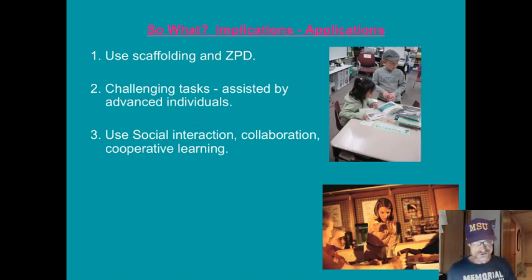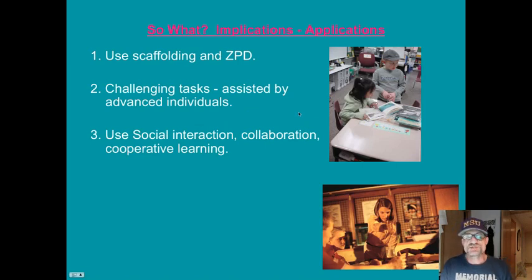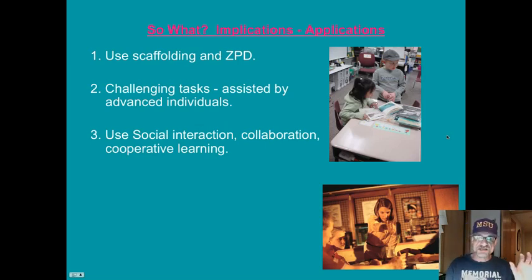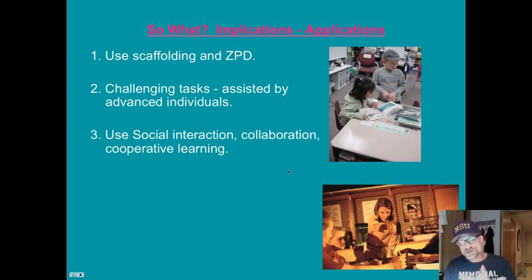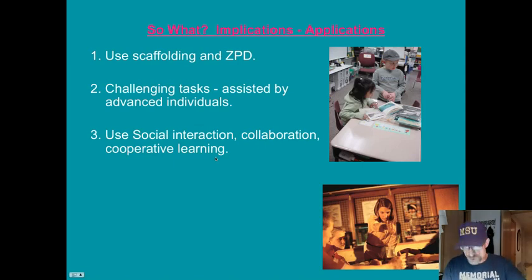The implications? Use scaffolding. Find that zone of proximal development. Children can grow and perform more challenging tasks when assisted by advanced others — older students, guides, teachers, or mentors. One big idea here is the multi-level or multi-age classroom, such as grades one through three or four through six, where you create learning experiences with social interaction, collaboration, and cooperative learning. The talk that naturally occurs between more and less advanced children creates a sort of scaffolding whereby they can learn the skill.